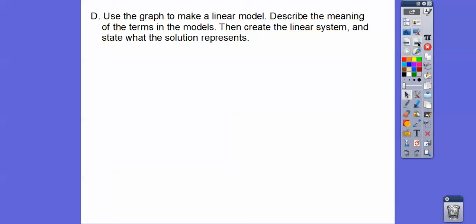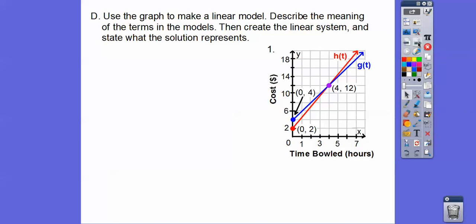We're going to use the graph to make a linear model and describe the meaning of the terms in the models, then create a linear system and state what the solution represents. So here they give us a graph and we're supposed to unravel everything about this graph. I can get slope with y sub 2 minus y sub 1 over x sub 2 minus x sub 1. I can do it for the red line also with these two points. No problem getting slope here.